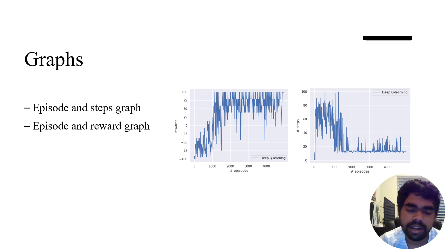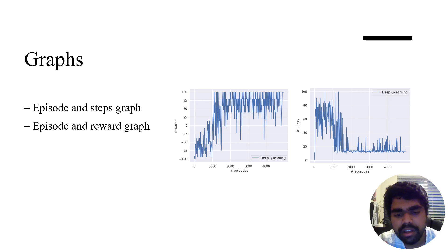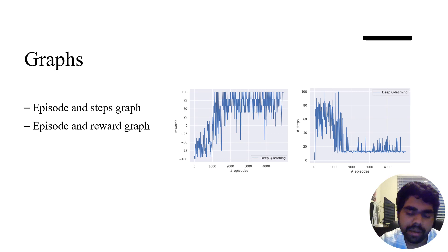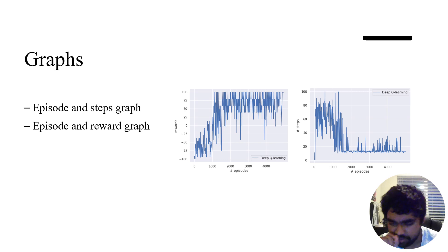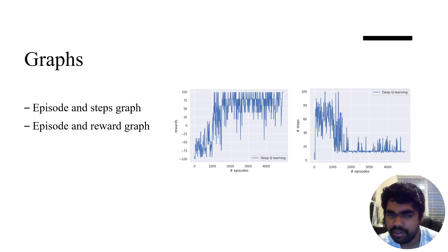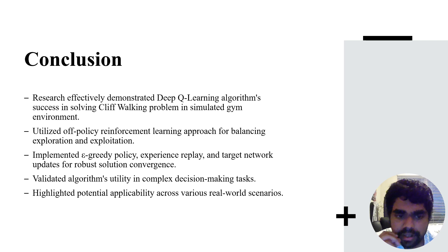Looking at the graphs — the episodes-vs-steps graph and the episodes-vs-reward graph: in the beginning, the agent was falling off the cliff very often, hitting minus 100 repeatedly. As the number of episodes increased, the reward started improving. For steps, we reduced the optimal number of steps taken by the agent — in the early episodes the agent fell off in one step, and at the end we reached a precise 13 steps to the goal.